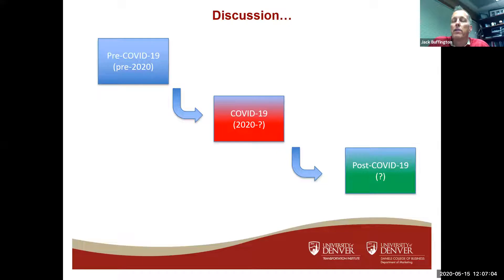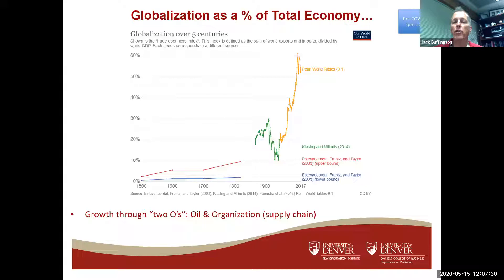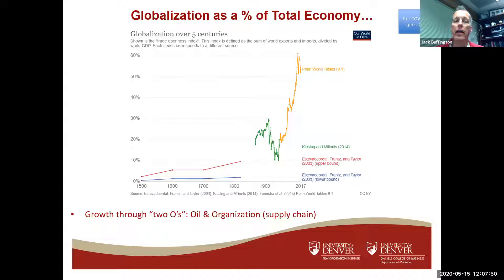We'll talk about what supply chains look like today relative to COVID, and what will happen in the future. If you look at globalization as a percent of the economy, it's massive. Different studies show what impact supply chain has had — what percent of the economy has been global. Over about 50 or 60 years this has grown dramatically through what I call the two O's: oil — so energy — and organization. That organization is truly defined by the system called supply chain. Before there were global markets, but it's much different from something being a global market to being a supply chain.